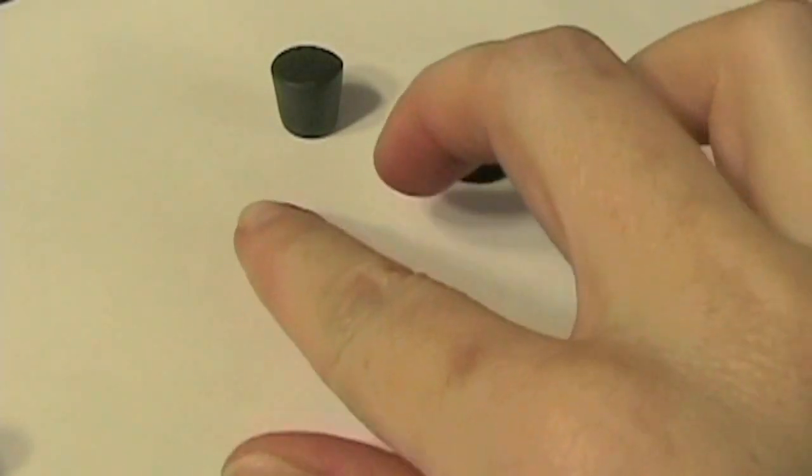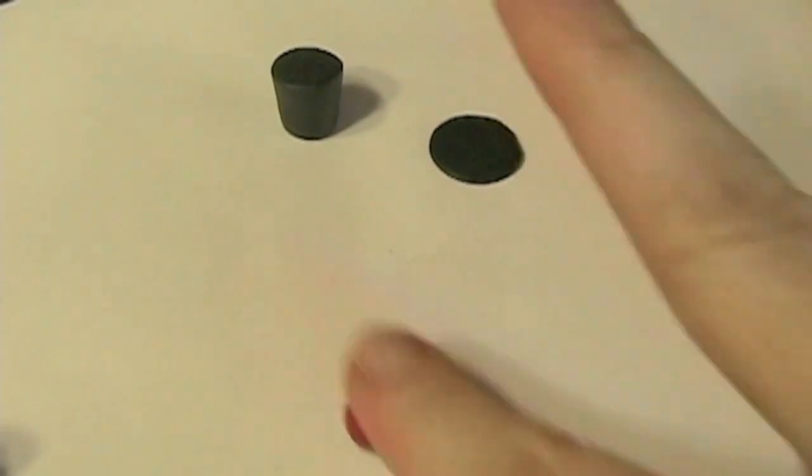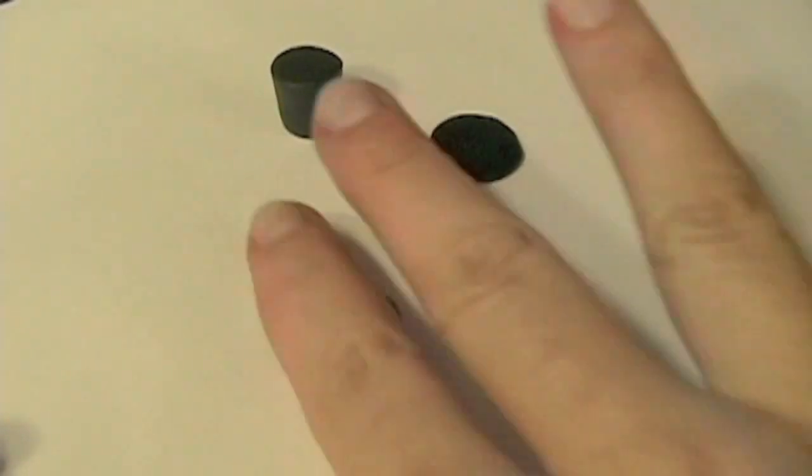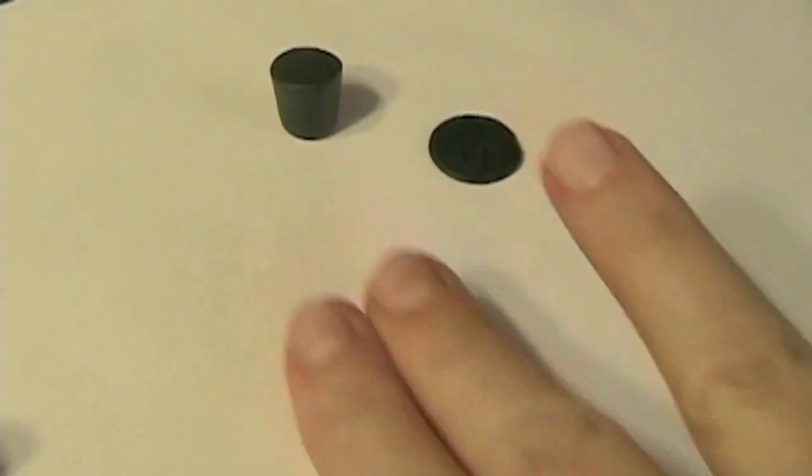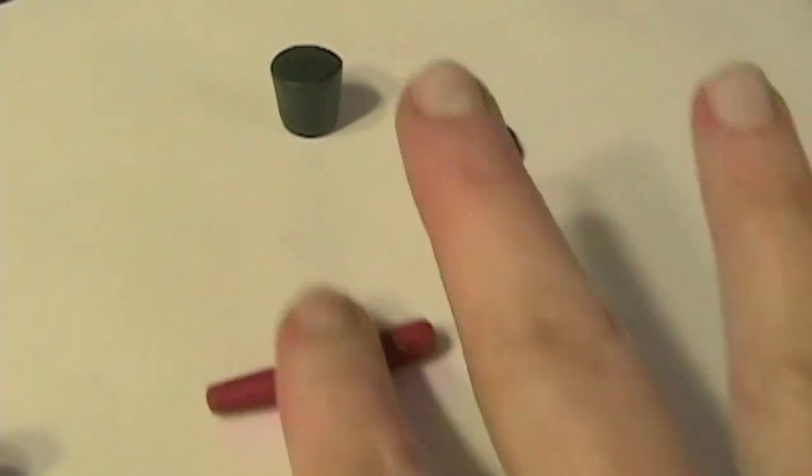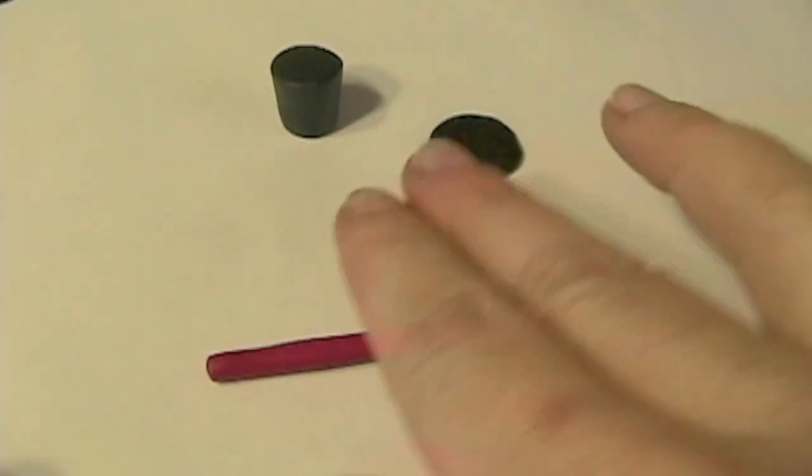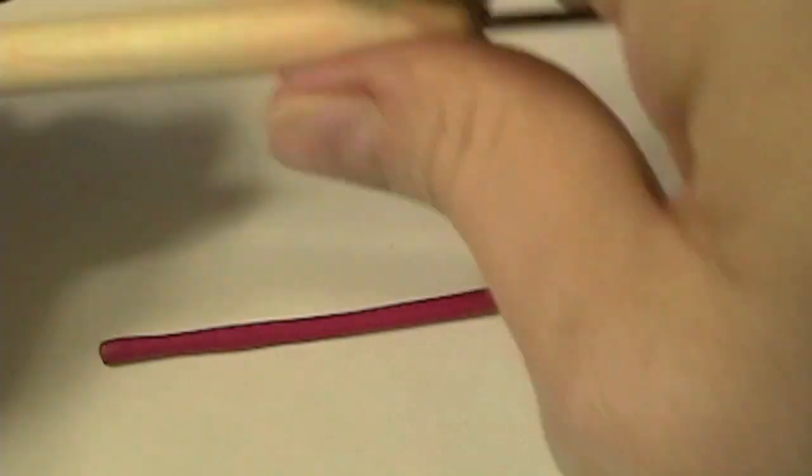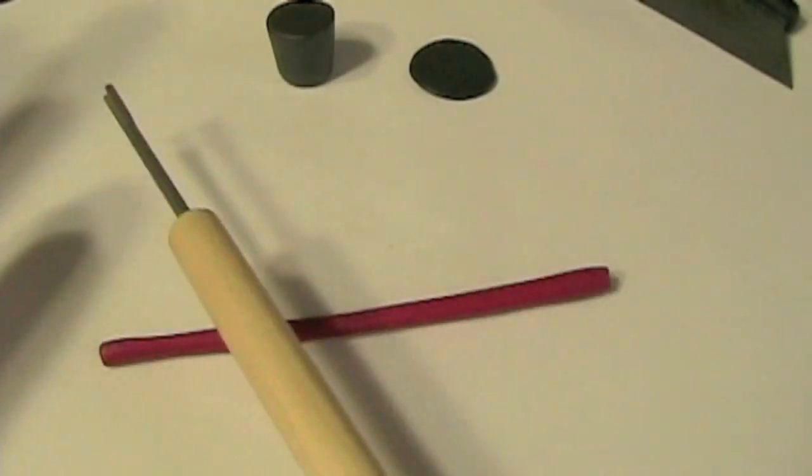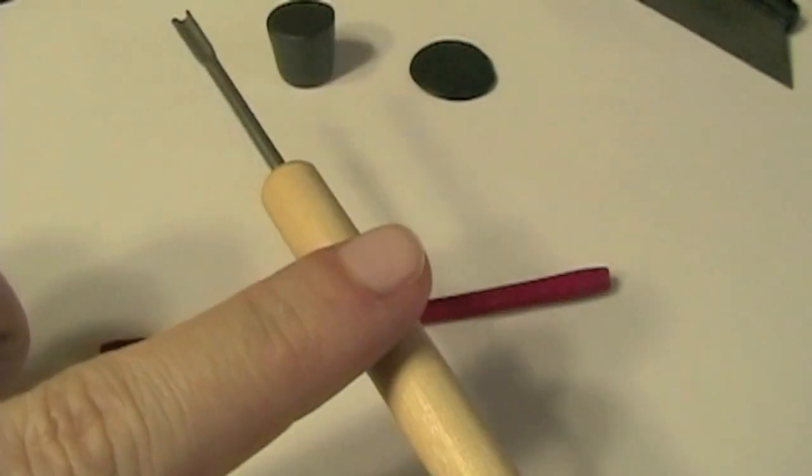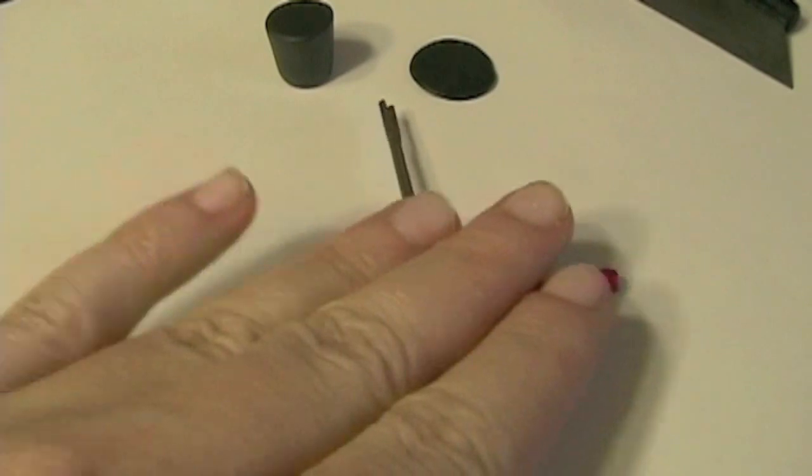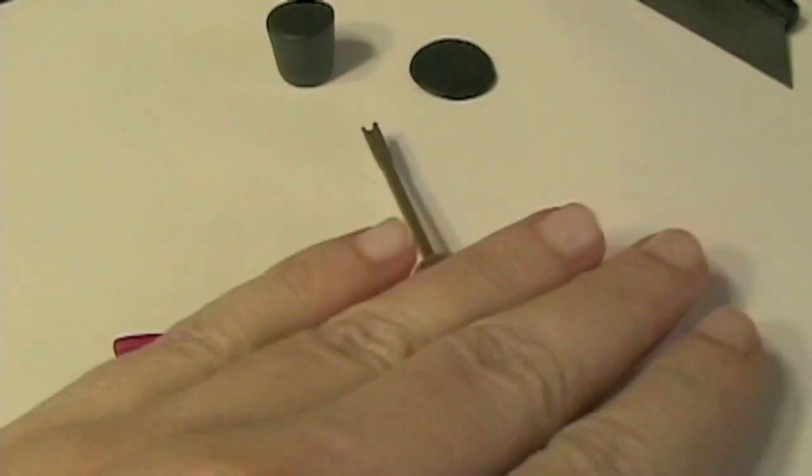Take some of your red metallic clay, roll it into a really thin cane. I'm going to roll this out and I'm just going to use the handle to this polymer clay tool.